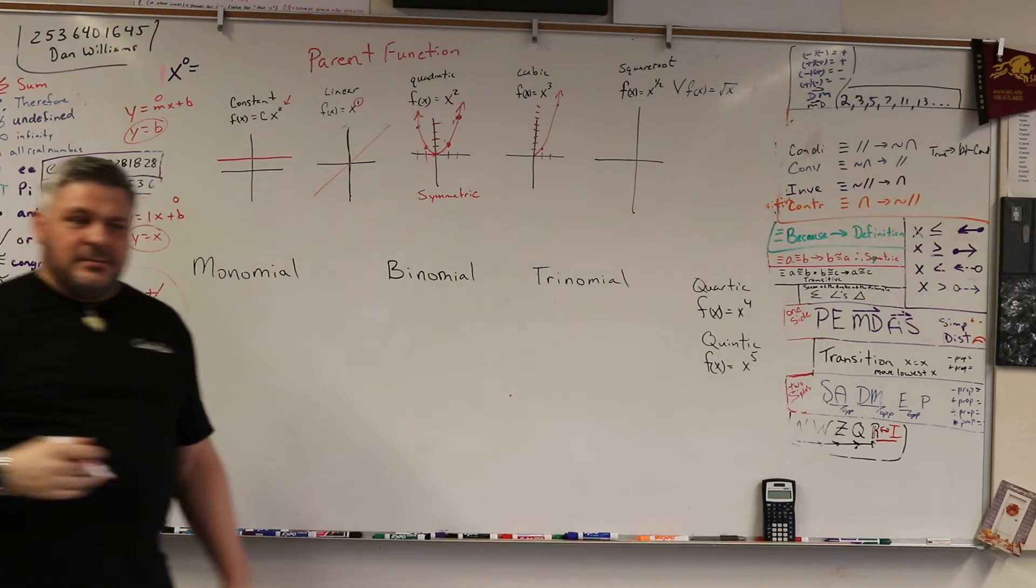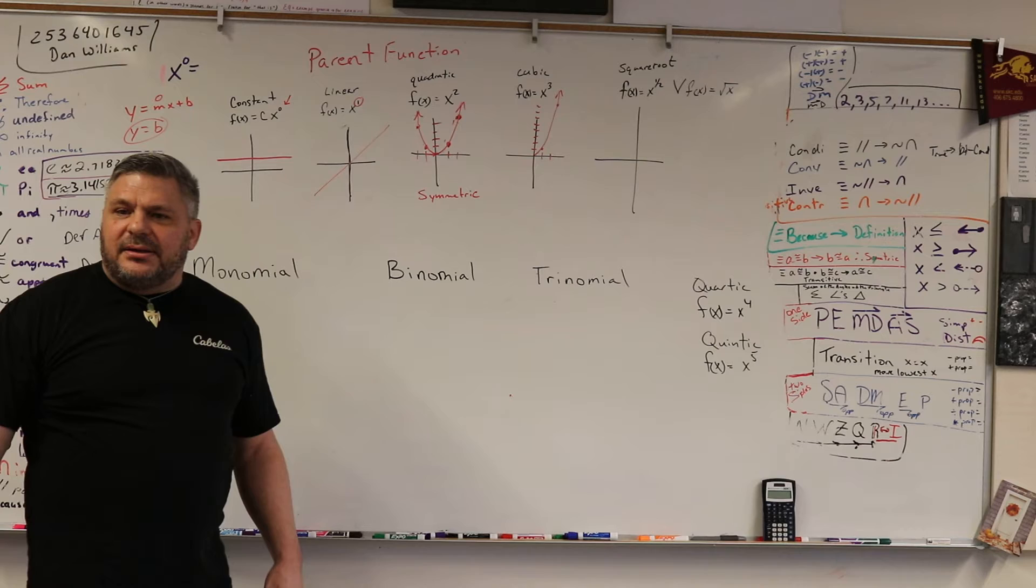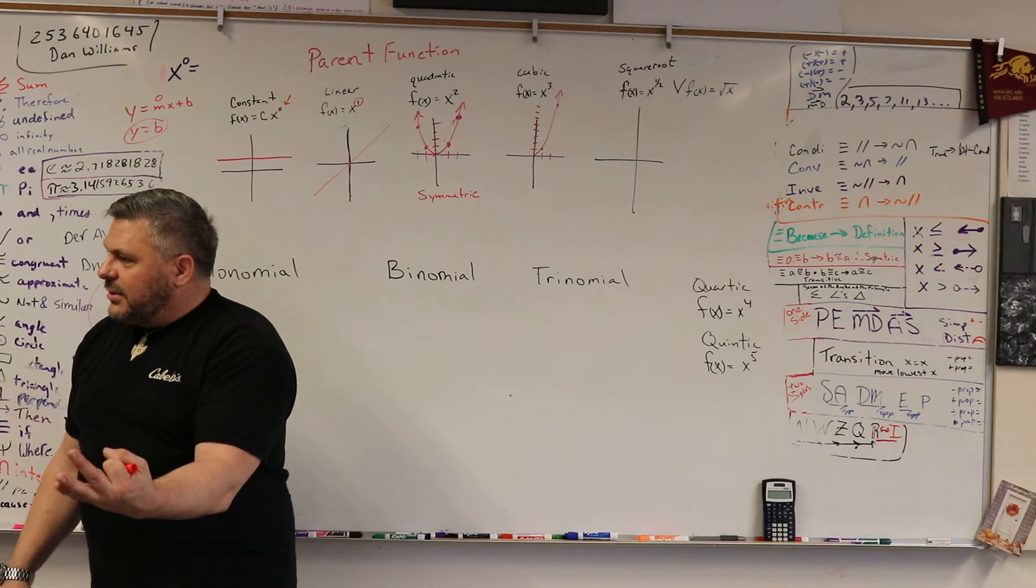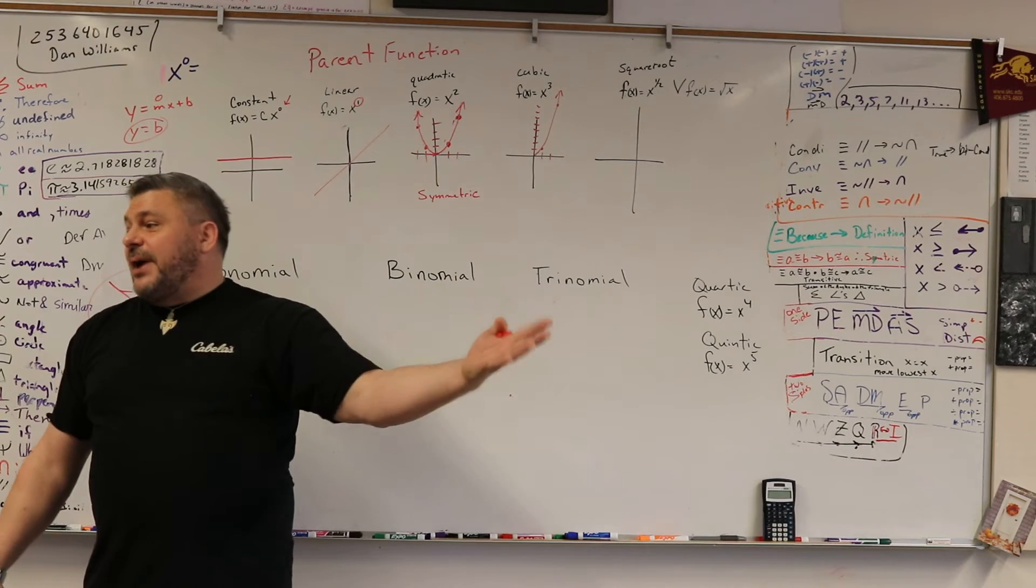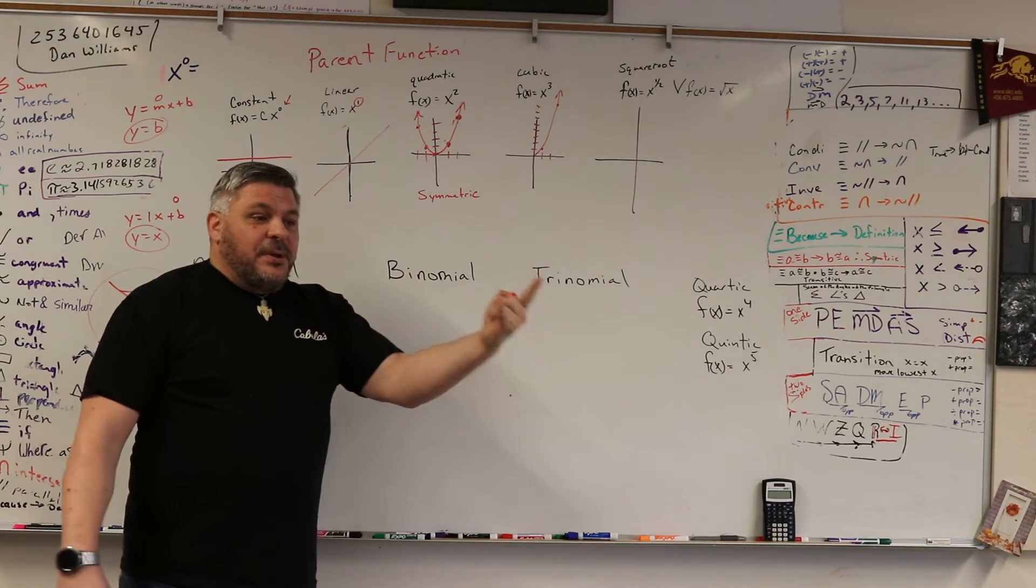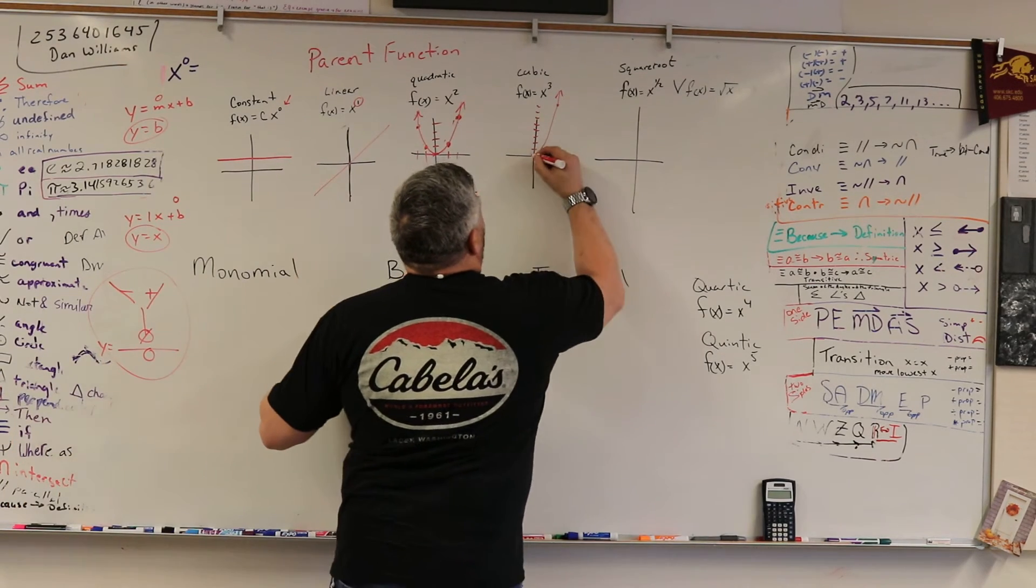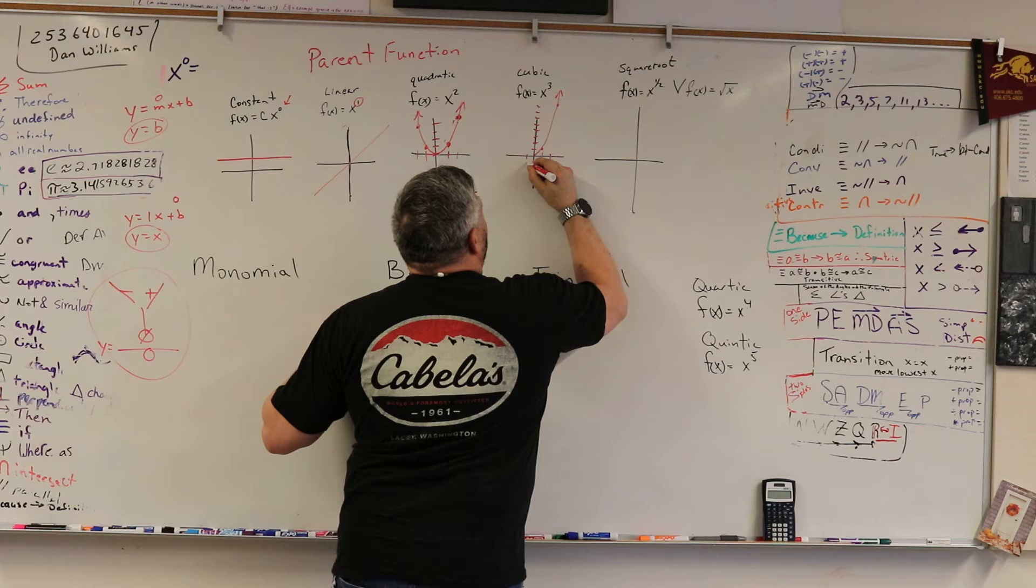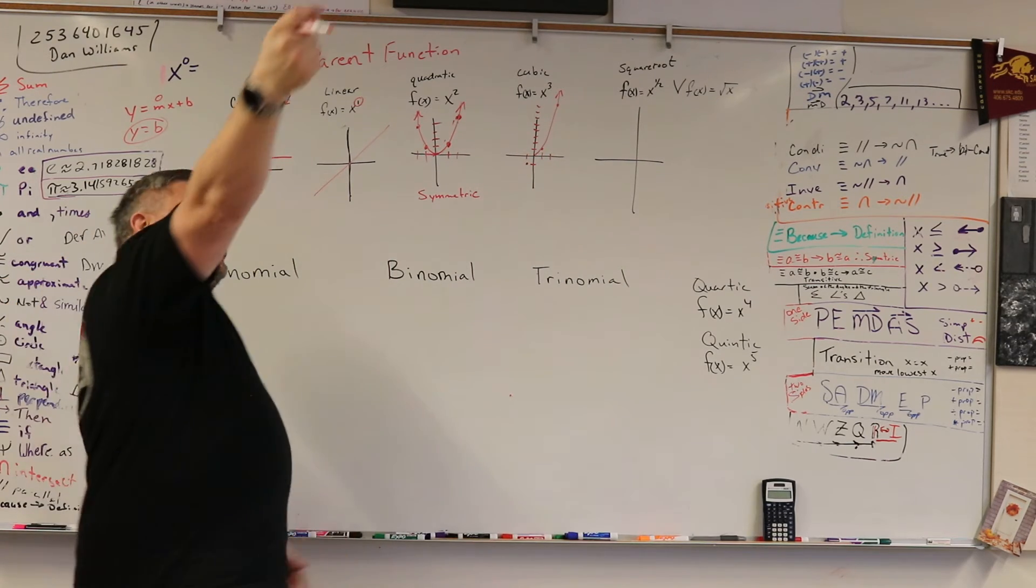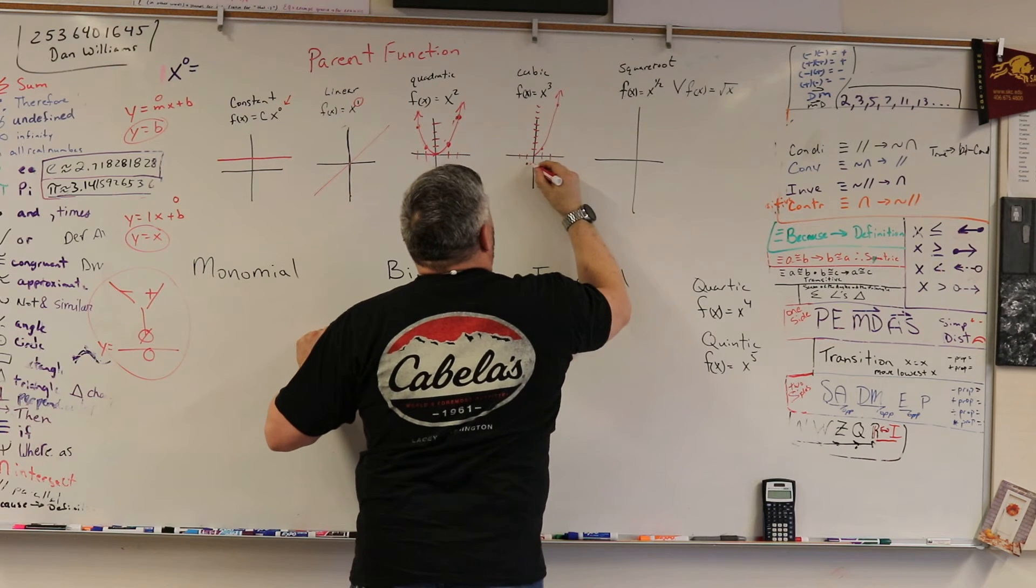But the opposite goes on this side. Because if you have three negatives, it makes a negative. If there were four negatives, it would be positive. Two negatives, it's positive. But three negatives, it's negative. One negative is negative. All right, so at negative 1, we're at negative 1. But at negative 2, we're at negative 8.